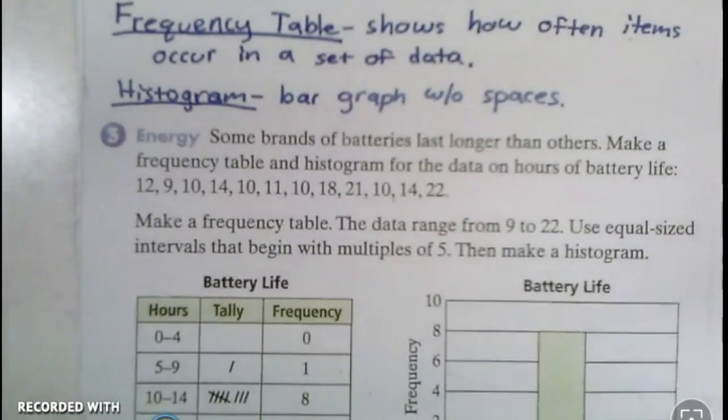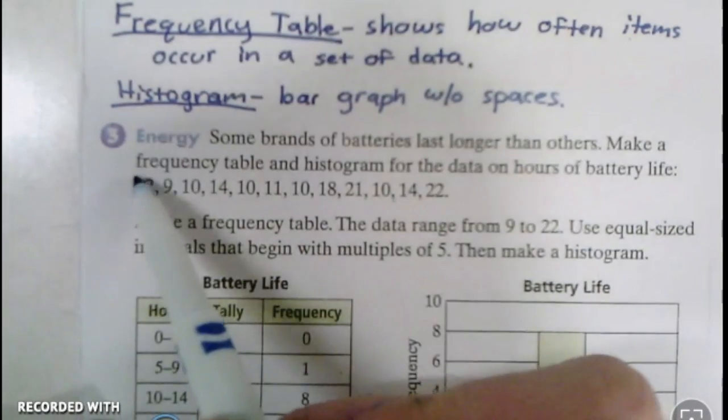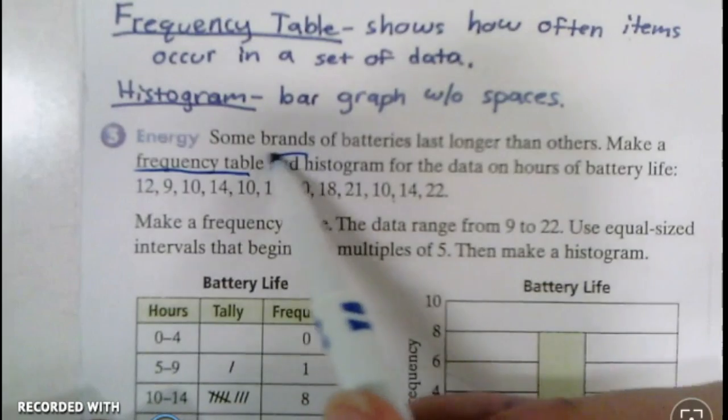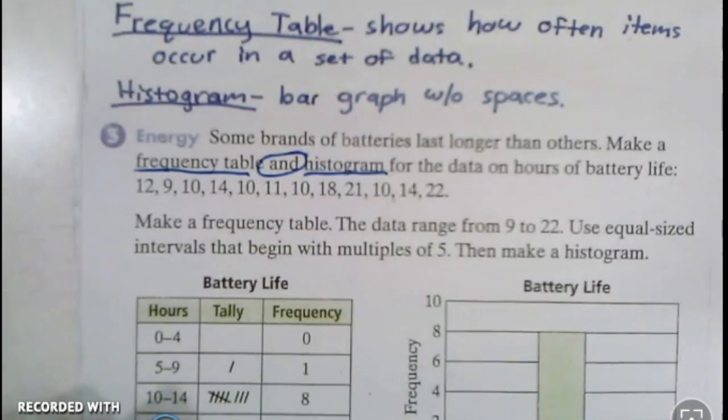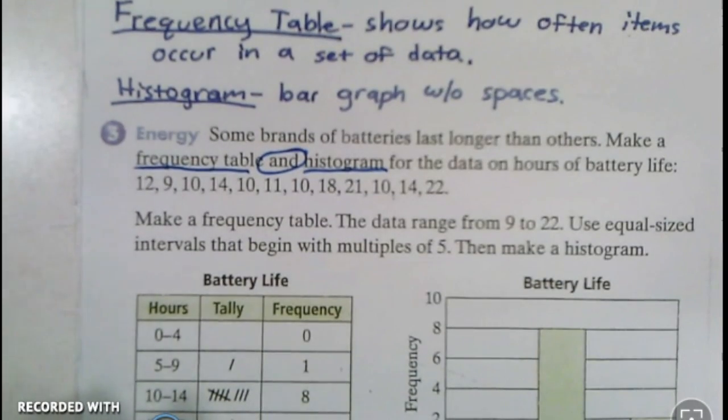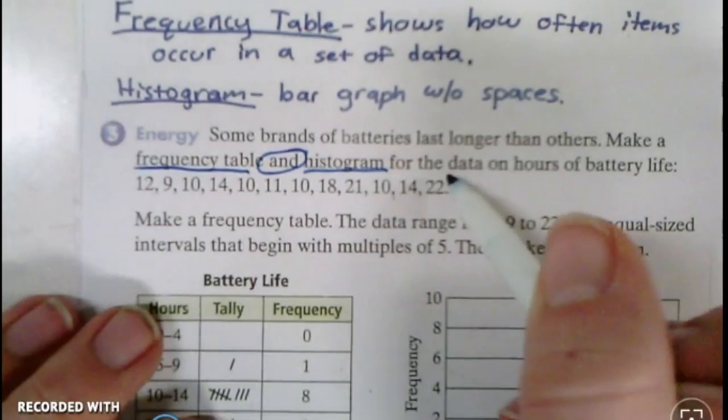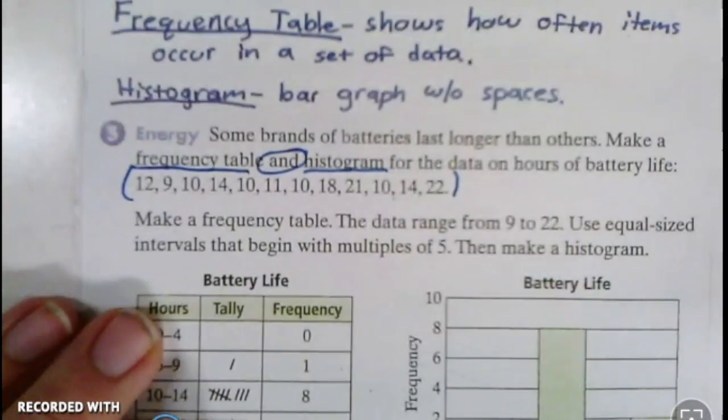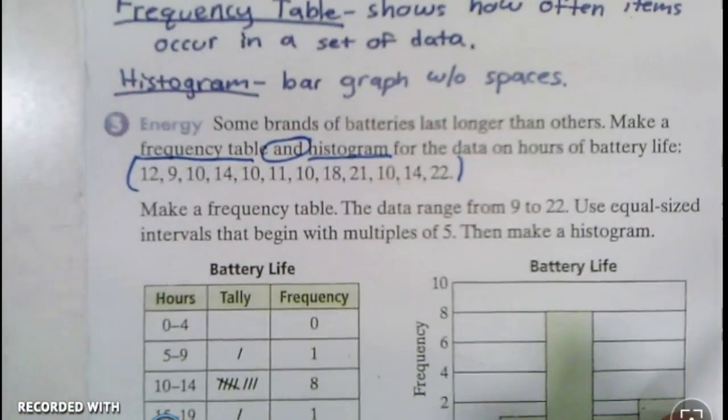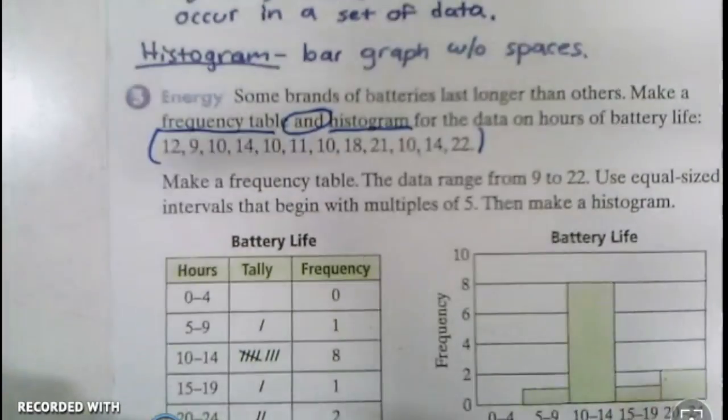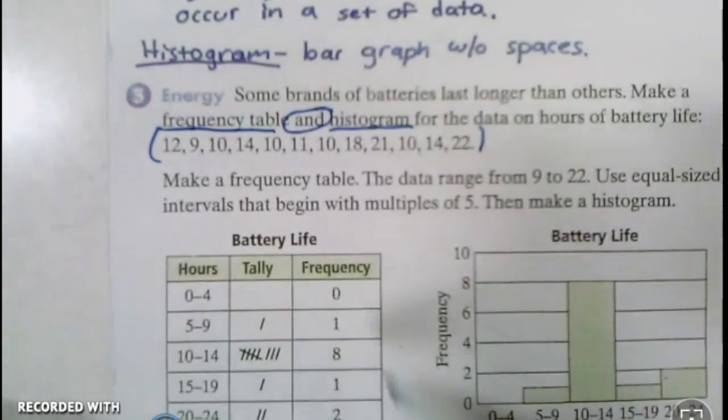Here is your last example problem. We have some brands of batteries last longer than others. Make a frequency table and a histogram for the data on hours of battery life. Here is our data.